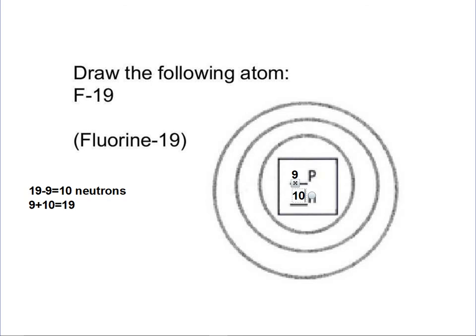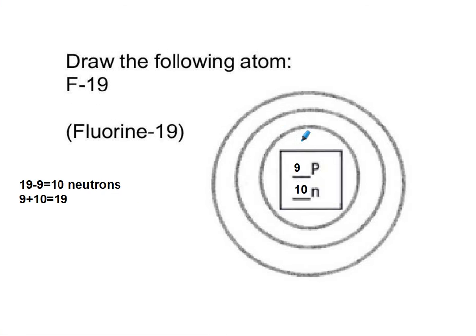Now add 10 neutrons in, and then we need to add our electrons. We have 9 protons, so we also need 9 electrons: 2 in the first energy level and 7 more for a total of 9. You should have 7 valence electrons — check your picture and look at your periodic table, which should show 7A on top of fluorine.